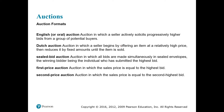There are several types of auctions. An English or oral auction is one in which a seller actively solicits progressively higher bids from potential buyers — an auctioneer motivates people to increase bids, and the highest bidder wins. A Dutch auction is one in which a seller begins by offering an item at a relatively high price and then reduces it by a fixed amount until the item is sold — starting high, reducing until a buyer accepts.